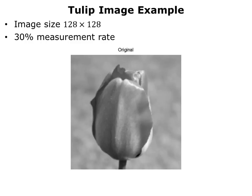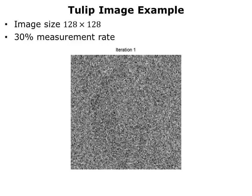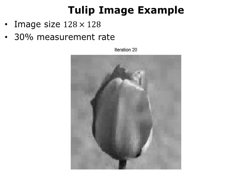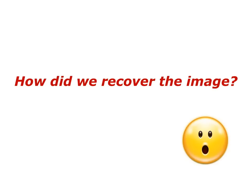As an example, consider an image of this flower, which is a tulip. The image is of size 128 by 128, and we're going to take a 30% measurement rate, meaning that the number of measurements is 128 times 128 times 0.3. After one iteration of our technique, which we'll describe in detail later, you have a very coarse estimate. And then, as you have more and more iterations — we're seeing 10 iterations and beyond — you get a better and better image.